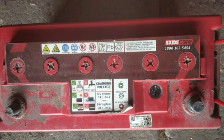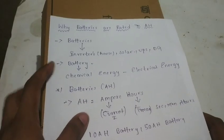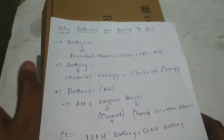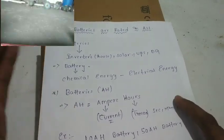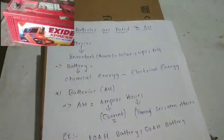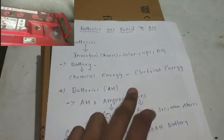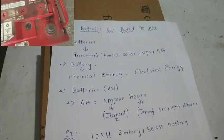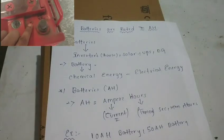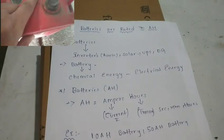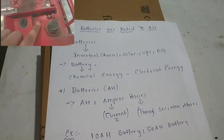How do we rate the battery ratings? We are going to know the batteries in diesel generators and UPS. Batteries convert chemical energy into electrical energy. How do we rate the batteries — in 150H, 10H, or 15H? This is the ampere hours.